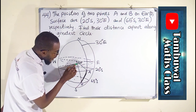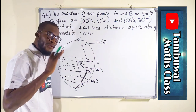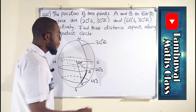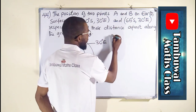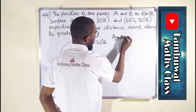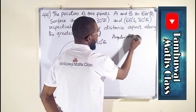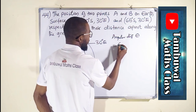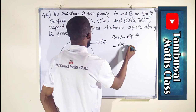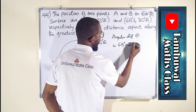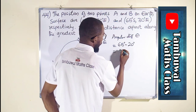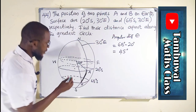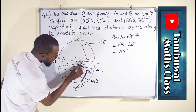If we are looking for the angle between them, since they are both in the same direction, we take the absolute difference. The angular difference, denoted by theta, is equal to 65 degrees minus 20 degrees, which equals 45 degrees. So this angle between the two points is 45 degrees.